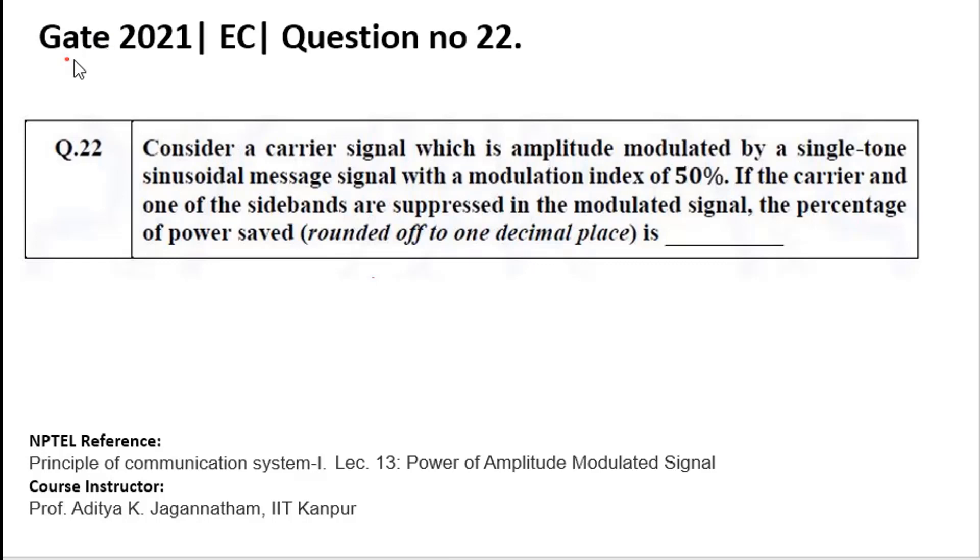This question was given in GATE 2021 Electronics and Communication. You have a carrier signal which is amplitude modulated by a single tone sinusoidal message signal with a modulation index of 50%. Later, the carrier and one of the sidebands are suppressed in the modulated signal. You need to find the percentage of power saved. The NPTEL reference for this question is Principle of Communication System.